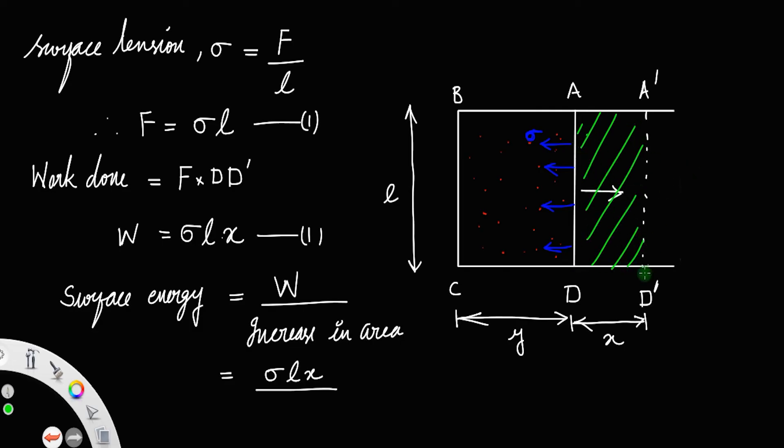The length is equal to L and breadth equal to x. Therefore, increase in area is equal to L x. Let us call surface energy as S. So canceling L x, this equals sigma, which implies the surface energy equals surface tension.